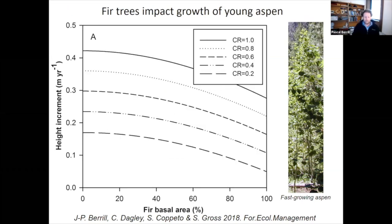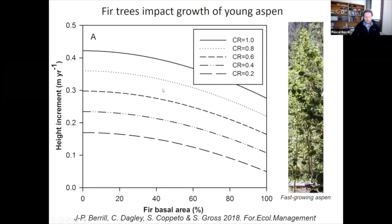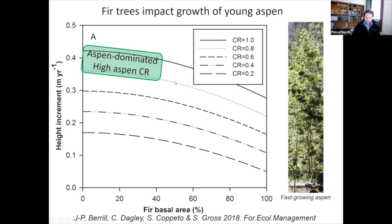There's another graph from that same paper with Stephanie Capito and Shana Gross, great collaborators with the Forest Service. We found that height increment declined with increasing fir basal area — so it wasn't just any conifer; it seemed as if fir trees as neighbors were causing a decline in aspen growth rates. We also see the effect of crown ratio: the best growth is happening when aspen have a high crown ratio in aspen-dominated stands.